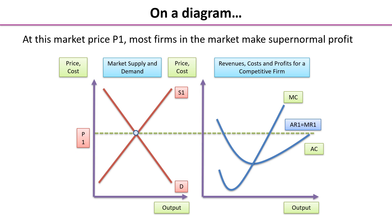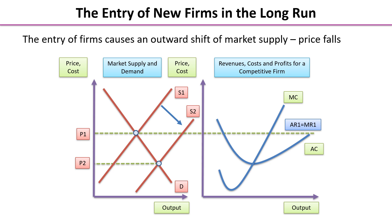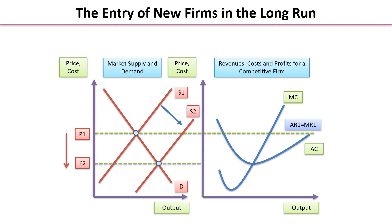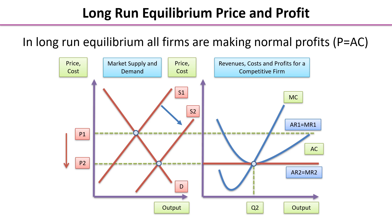On the diagram we can see the outward shift in the supply curve as new firms enter the market, and the lower price level at the new equilibrium P2. This becomes the new demand curve for the individual firm, and at the profit-maximising output Q2 — where MC equals MR2 — normal profit is being earned because AR equals average total cost.